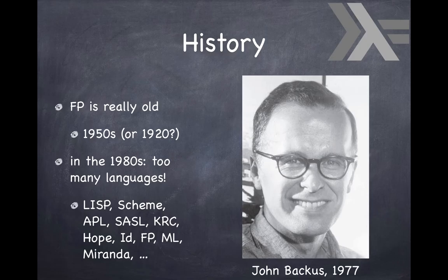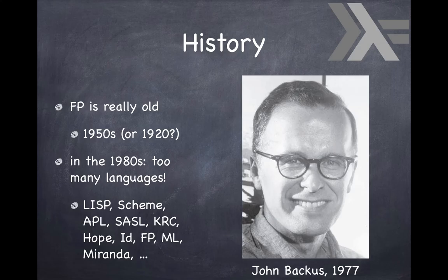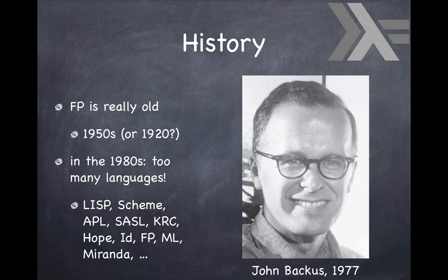Closer to our time, in 1977, John Backus, who was responsible for a language called Fortran — pretty much the opposite of Haskell — was invited to give a talk when he received the Alan Turing prize. But he said, 'Forget about Fortran, let's talk about this new thing I'm doing,' and that was FP, the language he came up with. His ideas — that the von Neumann architecture with memory and memory processing is not the only paradigm, and perhaps not the best — definitely attracted some new minds to functional programming.